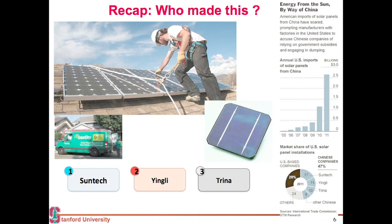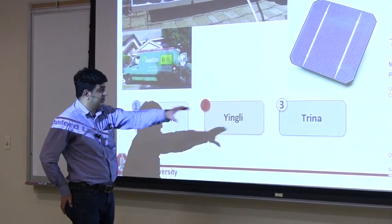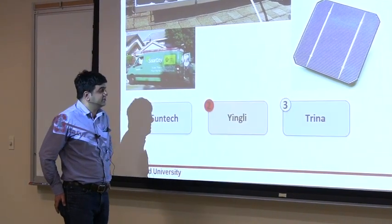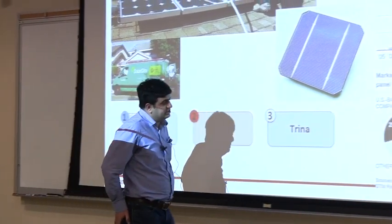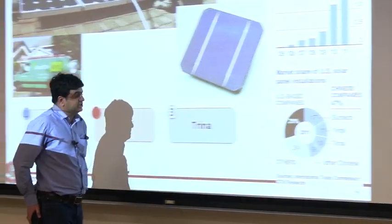These are all companies based in China: Yingli, Suntech, and Trina. Yingli was one of the only Chinese companies sponsoring the Olympics. You can see most of the U.S. installations for crystalline solar cells come from these companies.